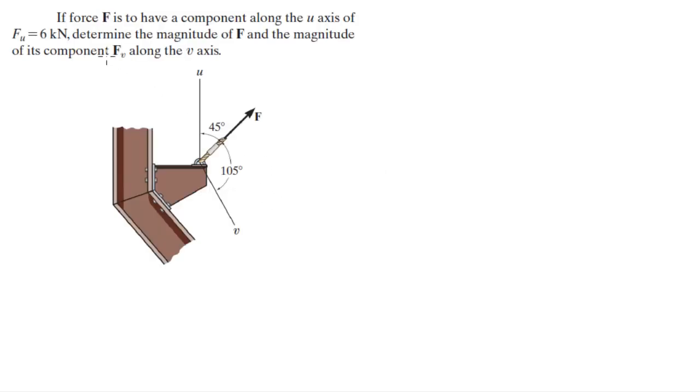Alright guys, now we have to do this problem which says if force F is to have a component along the U of 6kN, find the magnitude of F and the magnitude of the component along V.